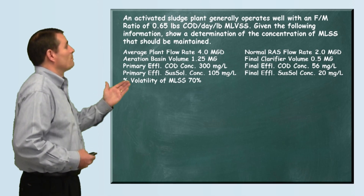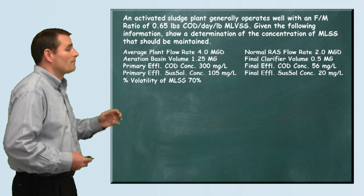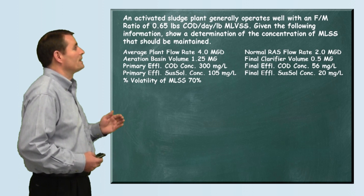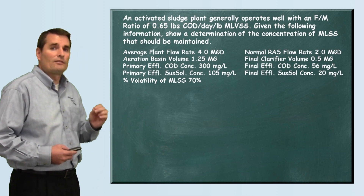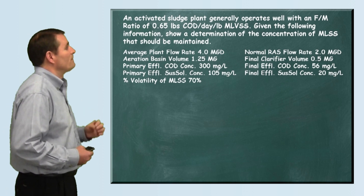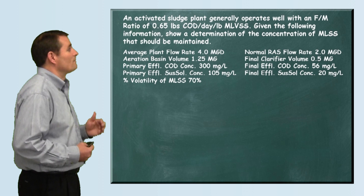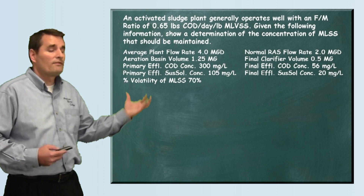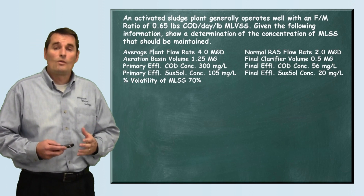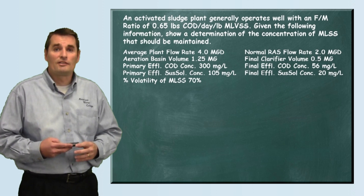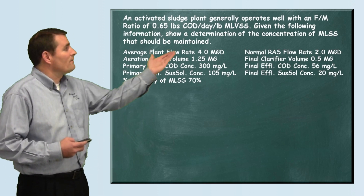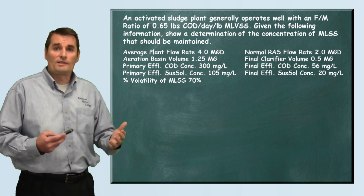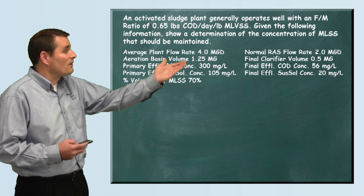The problem reads: an activated sludge plant generally operates well with an F to M — that's food to microorganism ratio — of 0.65 pounds of COD per day per pound of mixed liquor volatile suspended solids. Given the following information, show a determination of the concentration of mixed liquor suspended solids that should be maintained. Since the plant flows, concentrations, and volumes are already written for us, we'll proceed directly.